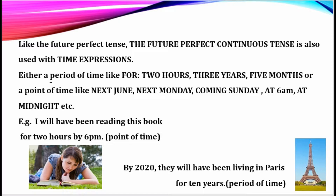Like the future perfect tense, the future perfect continuous tense is also used with time expressions. This is really important — many students make a mistake here. We are not supposed to use these expressions alone; they can't stand on their own. We have to support them with another action or event associated with it — either a period of time like 'for 2 hours,' 'for 3 years,' 'for 5 months,' or a point of time like 'next June,' 'next Monday,' 'coming Sunday,' 'at 6am,' 'at midnight,' etc.